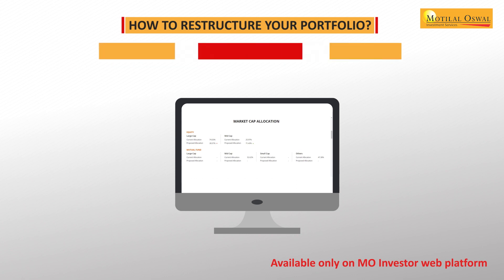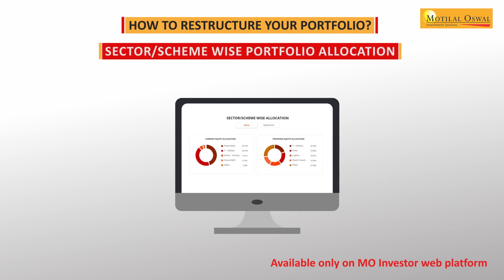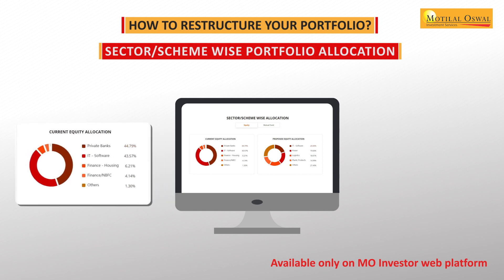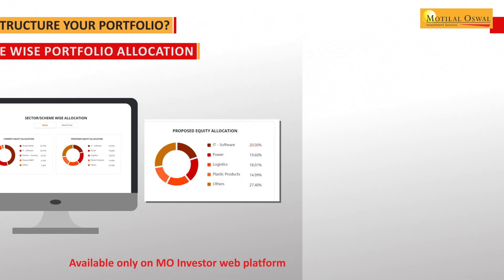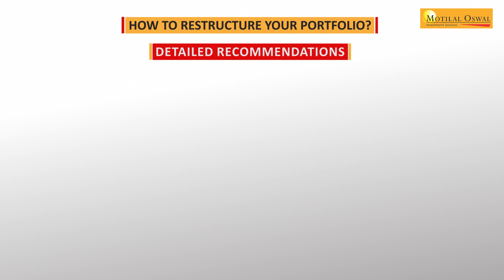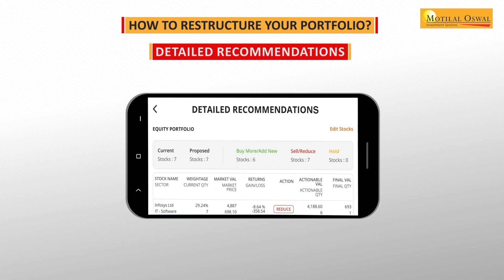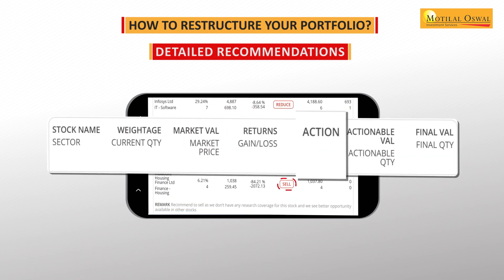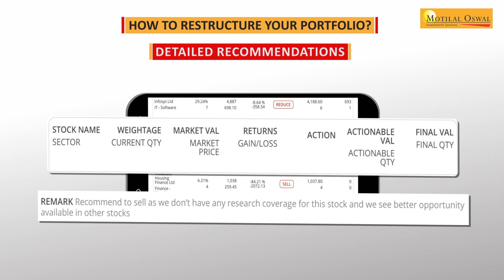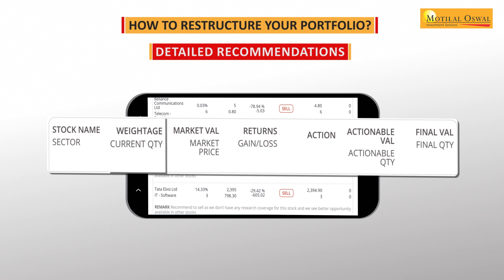Next is the sector and scheme wise portfolio allocation section where you can view detailed analysis of your current portfolio allocation versus proposed portfolio in terms of sector schemes, supported with pie charts. Finally, the most awaited section is detailed recommendations, which will provide in-depth details of the buy and sell recommendations generated along with proper rationale to restructure your current portfolio. It will also display current quantity and weightage of your individual holdings.